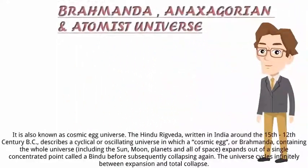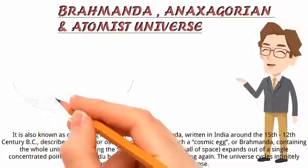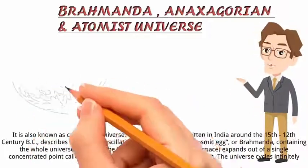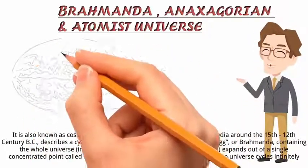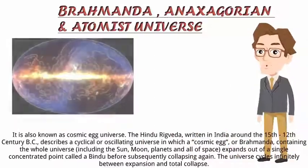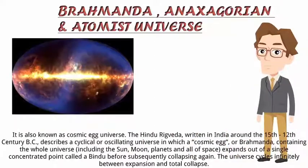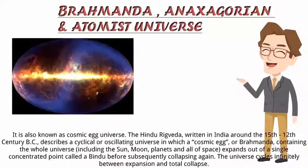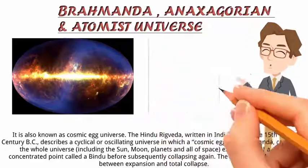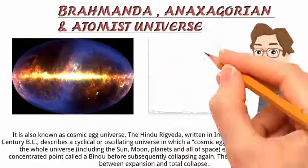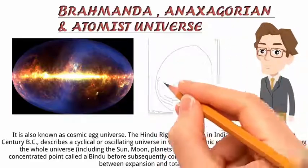The first theory is about the Brahmanda universe, also called the cosmic egg universe. The Hindu Rigveda, written in India around the 15th–12th century BC, describes a cyclical or oscillating universe in which a cosmic egg, or Brahmanda, containing the whole universe including the sun,